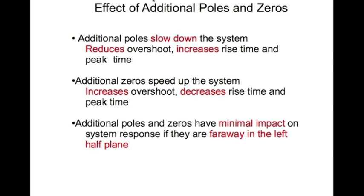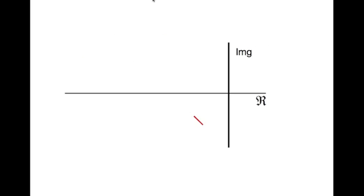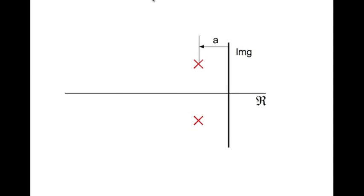Additional poles and zeros have minimal impact on the system response if they are far away in the left half plane. What does 'far away' mean? If the original system is at a distance a from the imaginary axis, a new pole or zero is significant if it is less than 5a from the imaginary axis, and insignificant or negligible if it is greater than 5a from the imaginary axis.